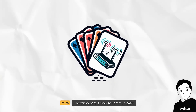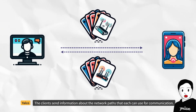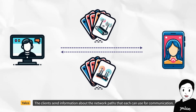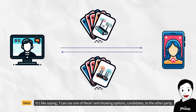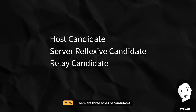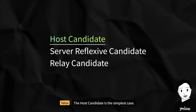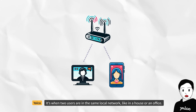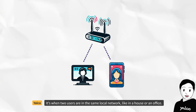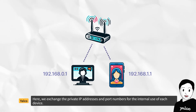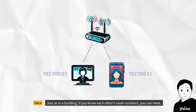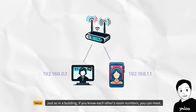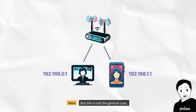The tricky part is 'how to communicate.' The clients send information about the network paths that each can use for communication — we call this an ICE candidate. It's like saying 'I can use one of these candidates' to the other party. There are three types of candidates. The host candidate is the simplest case: when two users are in the same local network, like in a house or an office. Here, they exchange the private IP addresses and port numbers for the internal use of each device — just as in a building, if you know each other's room numbers, you can meet.